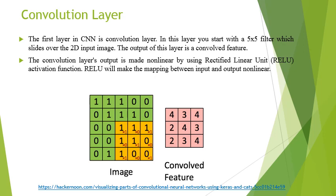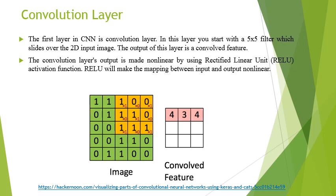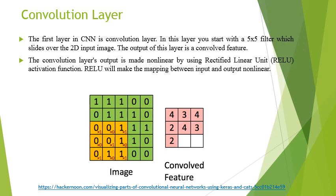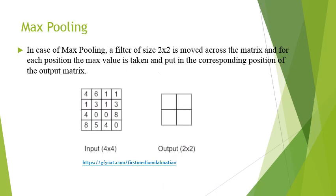After getting the convolved feature, I apply an activation function. The activation function makes the relationship between the input and output non-linear. Complex relationships can only be modeled using non-linear functions. Here I am using 5×5 filters, though in the GIF it shows a 3×3 filter. I apply the ReLU activation function on the convolution layer output.